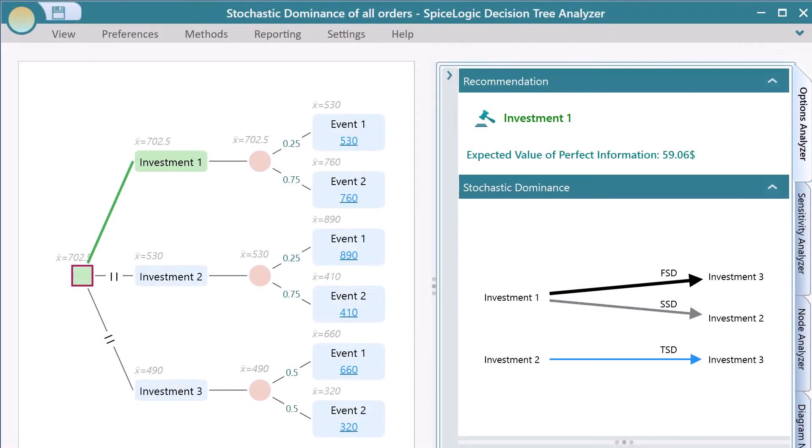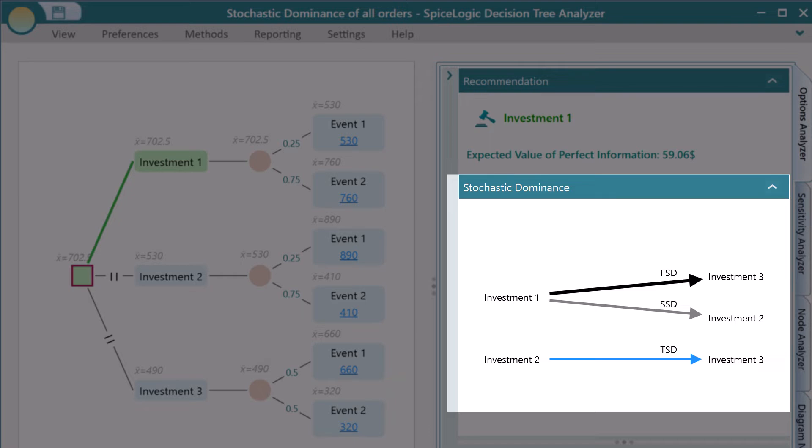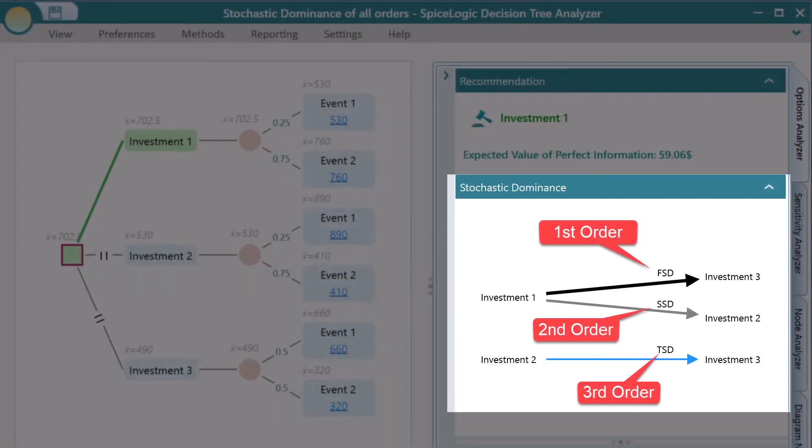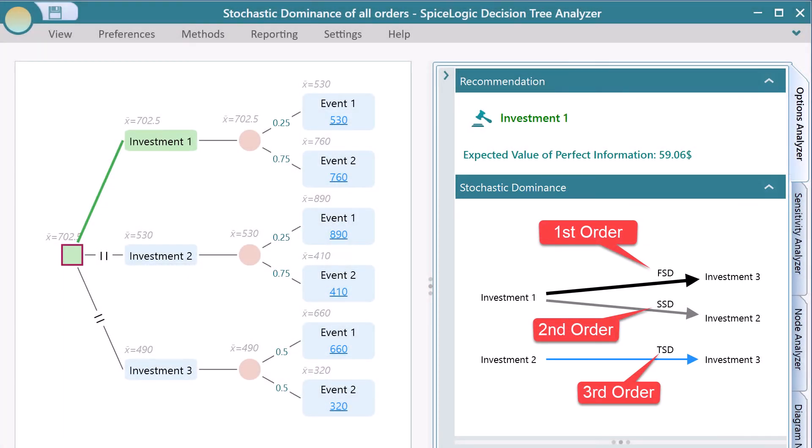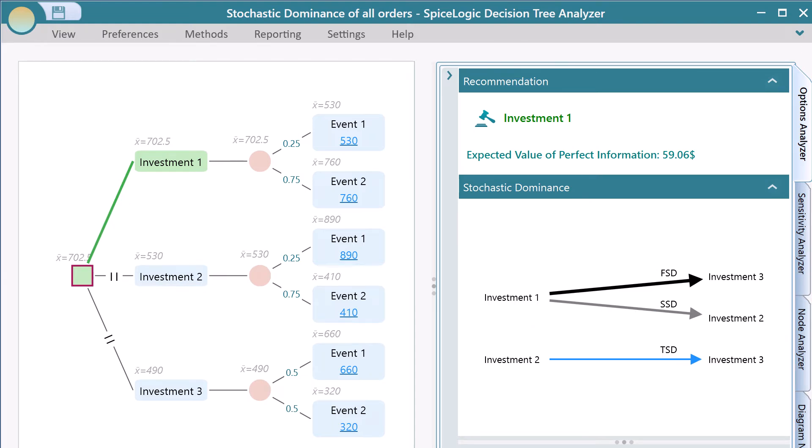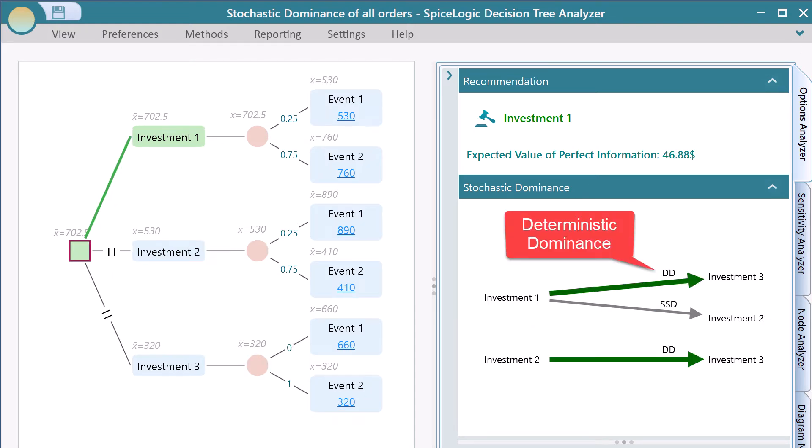The software can calculate the stochastic dominance of first order, second order, and third order. The software will also check deterministic dominance, statewide dominance, and mean variance dominance.